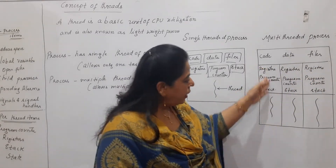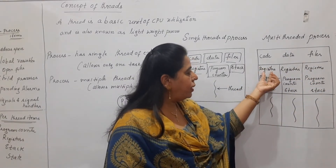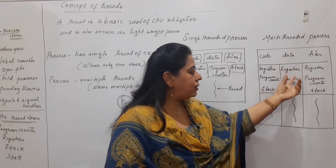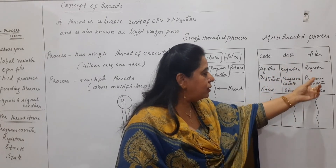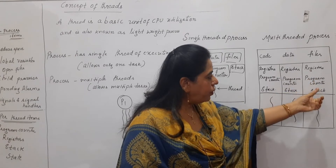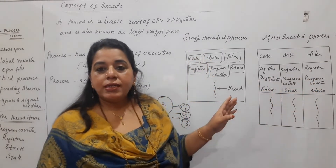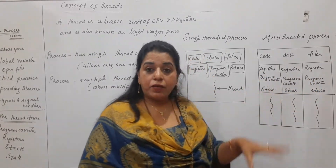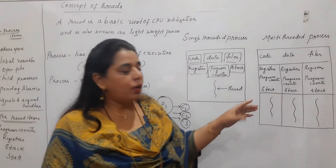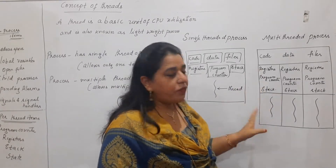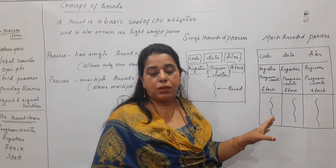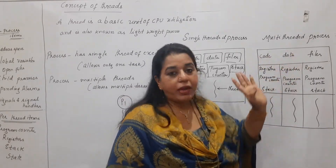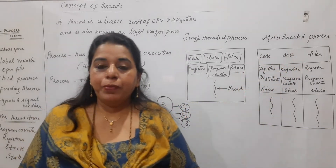Whereas each of these threads will have its own register set, program counter, and stack. Register set, program counter and stack — for each of the three threads. So these are the three different items, and also the state of the thread is there. These are the different items that a thread owns, whereas code, data, and files for all the threads will be the same.